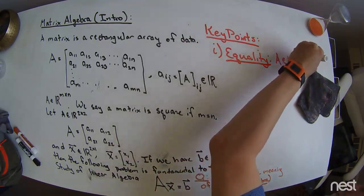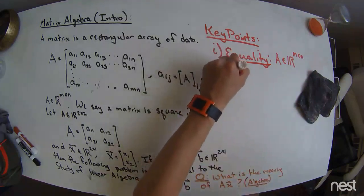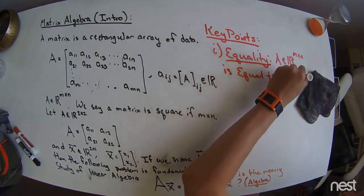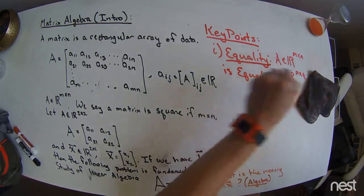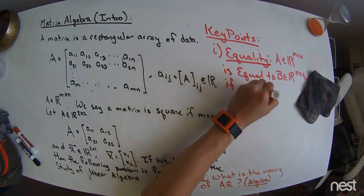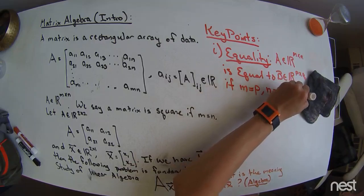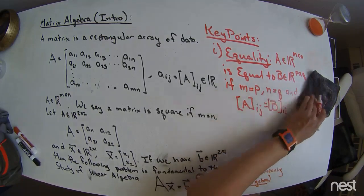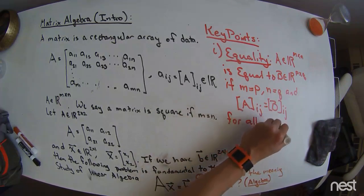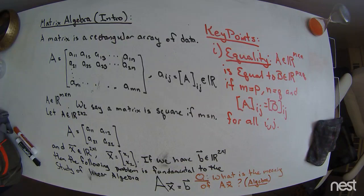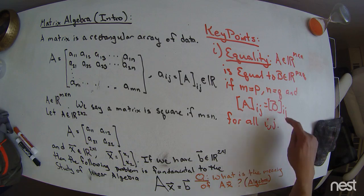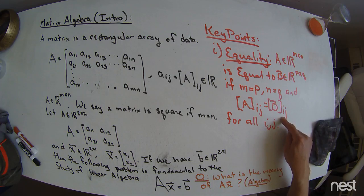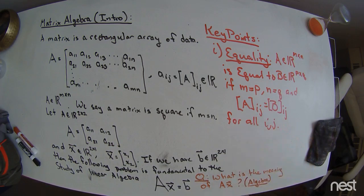So here are some key points. Key point 1, equality. A, which is equal to, or which is, say, M by N matrix, is equal to B, which is a P by Q matrix, if M is equal to P, and N is equal to Q, and A sub I,J is equal to B sub I,J for all I and J. And what that's saying is that I'm only going to speak to matrices that are equal if their sizes are the same. So spreadsheets are going to be the same spreadsheet if they have the same number of rows and columns. And the statement here says all their cells are equivalent.